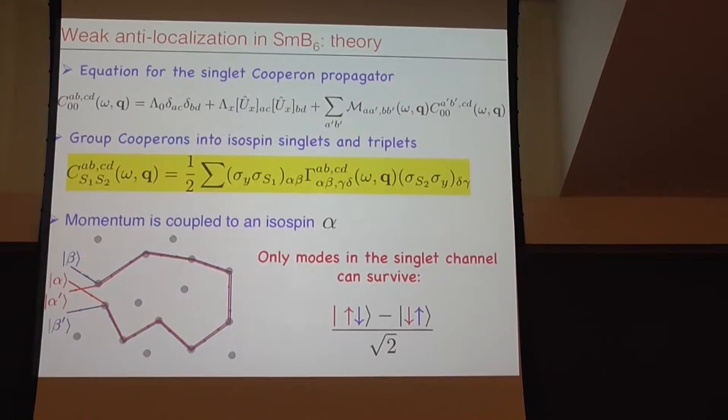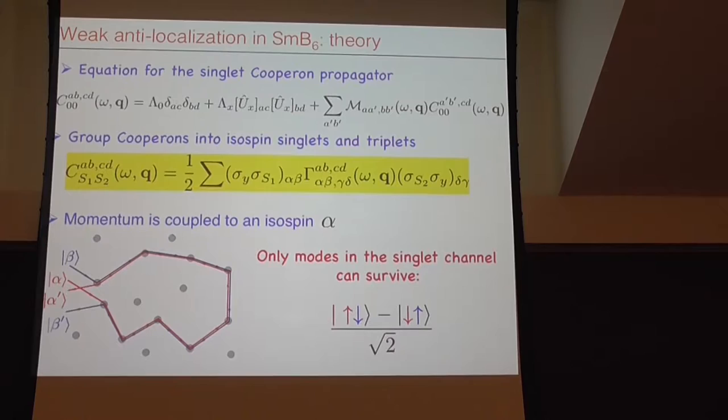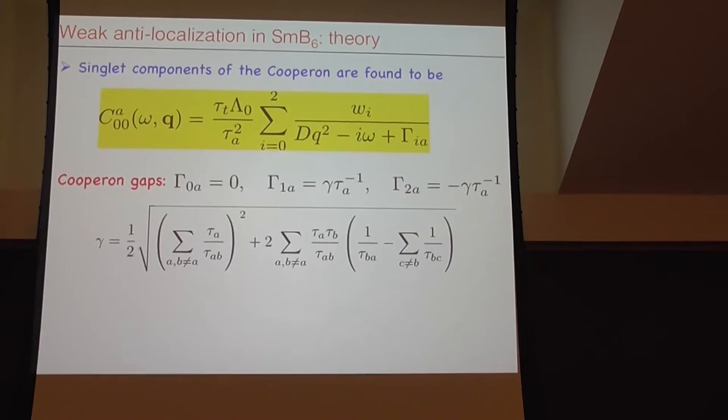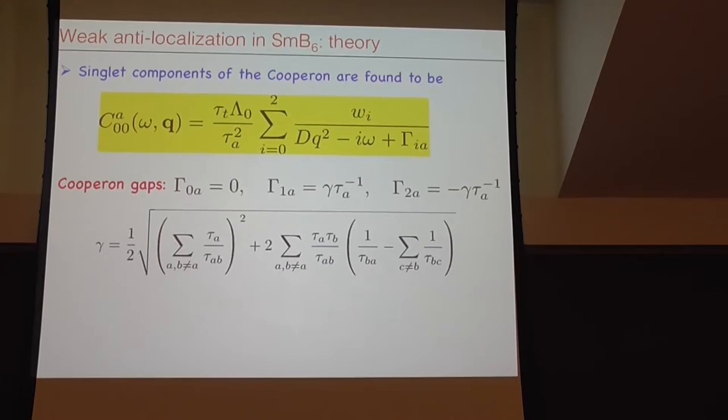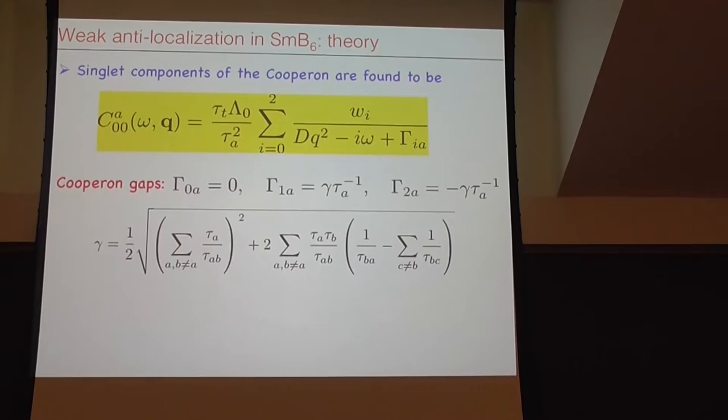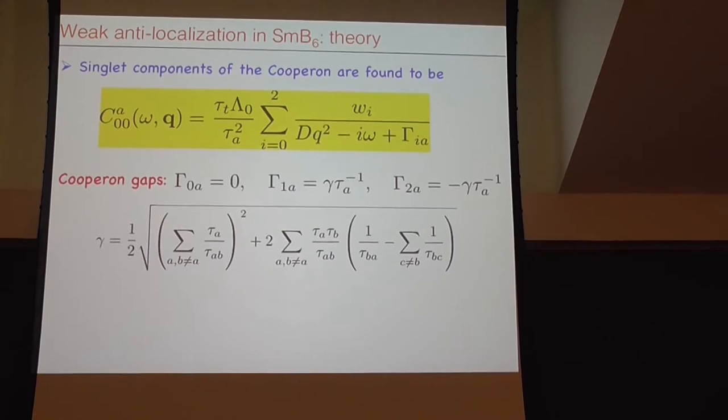I'm considering here only disorder which does not break time reversal symmetry. For now I'm ignoring magnetic disorder. The rest is known. You can almost copy-paste the calculation which has been done for graphene. You need to solve the Bethe-Salpeter equation for this function called the cooperon - the two-particle Green's function. Physically, it makes sense to use the basis which has spin-singlet and spin-triplet components. When you go around the loops, around the impurities, the only processes you have are singlet processes.